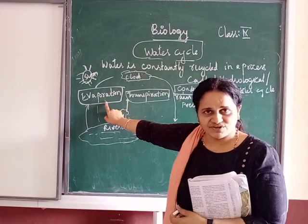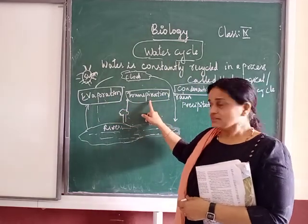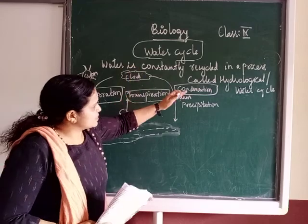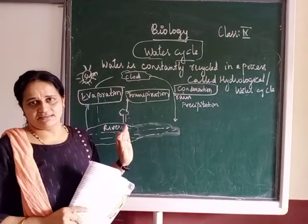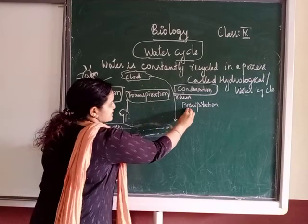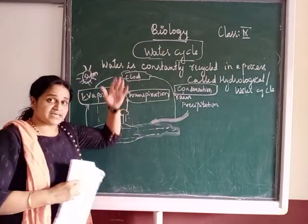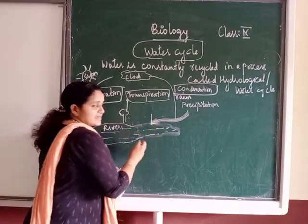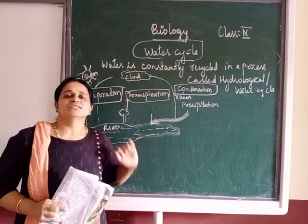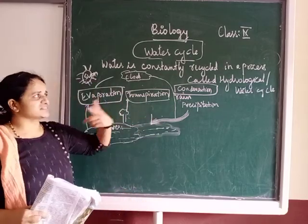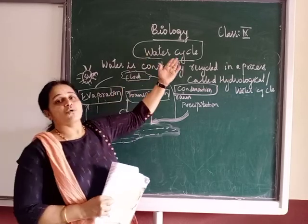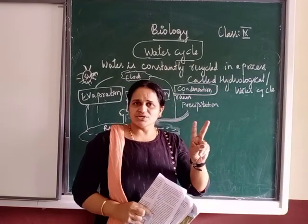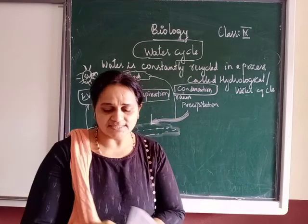Evaporation is one reason, and transpiration is another. There is also precipitation — clouds coming down in the form of rain. Sometimes during heavy rain, water washes down from hills and low-lying areas, flowing back to rivers, lakes, and ponds, and finally going into the sea. This constant recycling is called the water cycle or hydrological cycle.